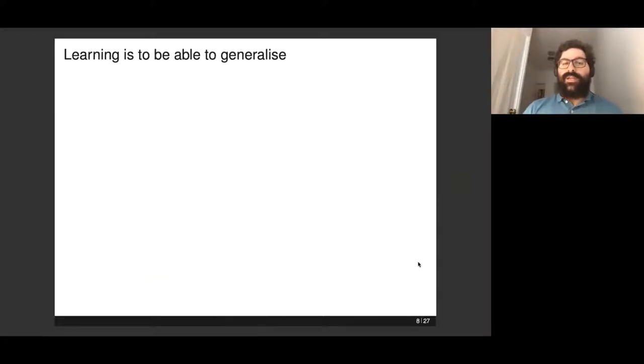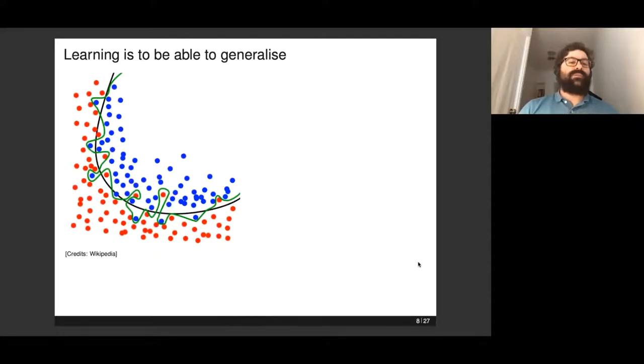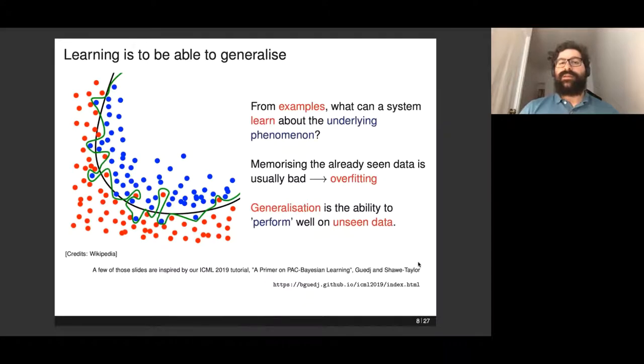One of my personal claims—not just mine, I think a large part of the machine learning community shares this—is that learning is actually nothing more than being able to generalize. What is generalization? This is a very classical picture from Wikipedia. This illustrates that if you want to learn some particular phenomenon, it's not enough to learn by heart what has happened in the past, to absolutely mimic all the data you've collected.